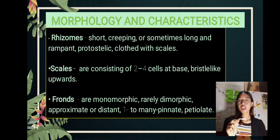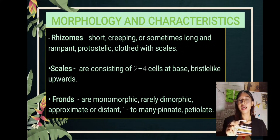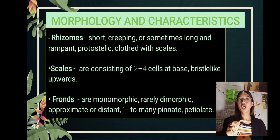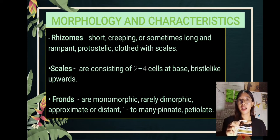The morphology and characteristics. For the rhizomes, it is short, creeping, or sometimes long and rampant, protostelic, with clathrate scales. The scales consist of 2 to 4 cells at base, bristle-like upwards. The fronds are monomorphic, rarely dimorphic, approximate or distant, one-to-multipinnate, and petiolate.